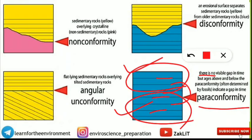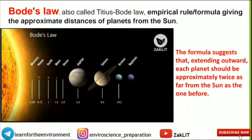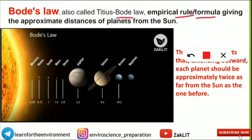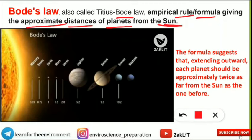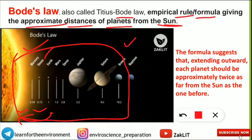So those are the four types of unconformity. Now we move from earth to the sky — Bode's Law, also called Titius-Bode Law. It is an empirical rule or formula giving the approximate distance of the planets from the sun. The distances are measured in Bode's Law units: 0.39 for Mercury, 0.72 for Venus, and 1 for Earth. Only seven planets from Mercury to Uranus are considered — Neptune is not included in Bode's Law.